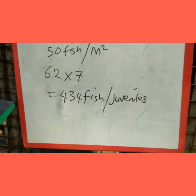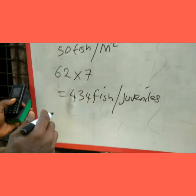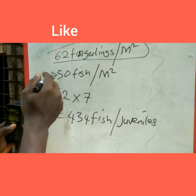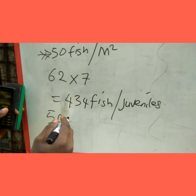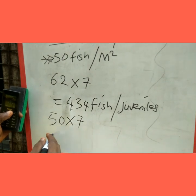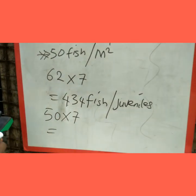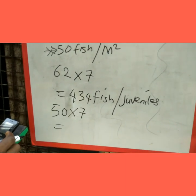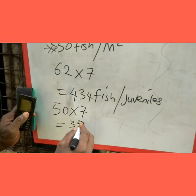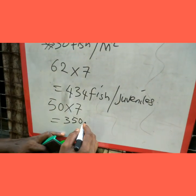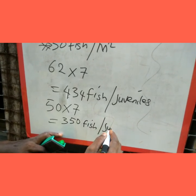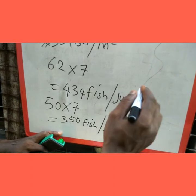But I want to raise them to 1 kg, so I'm going to use 50 fish per square meter. That's 50 times 7 — remember, the area of our pond is 7 square meters — which equals 350 fish or juveniles. That is the quantity of fish I can stock in this pond.